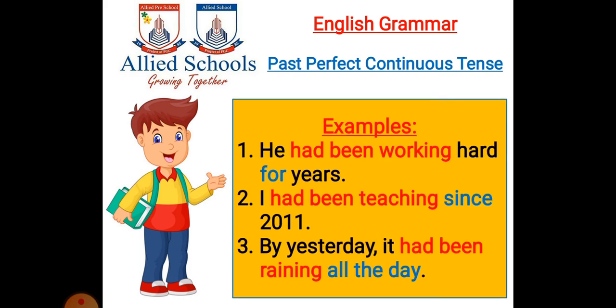Look at these sentences to see how to use these signal words. Number one: He had been working hard for years. Saalon se wo mehnat kar raha tha. Number two: I had been teaching since 2011. 2011 se mein parha rahi thi. Number three: By yesterday, it had been raining all the day. Kal se sara din baarish ho rahi thi.